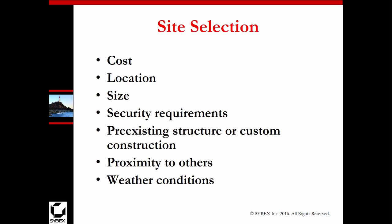We have to do what's called a site selection. We have to pick a location, and that's going to involve location, cost, size, requirements, security requirements — do you have to build a building, do you already have a pre-existing building, will the pre-existing building fit your needs, is it too close to other buildings, if you're doing something that requires dry air is it an open or closed building. You have to think carefully when picking the location.